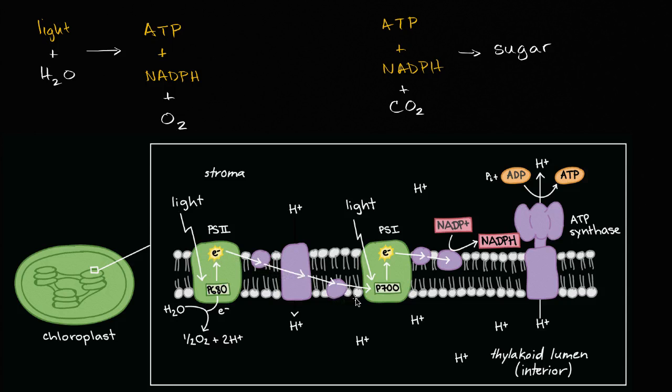They're going from a higher energy state to a lower energy state. The electrons are getting more and more comfortable, and some of that energy that's released as the electron goes from a high energy state to a lower energy state is used to pump hydrogen ions across the membrane, from the outside of the membrane in the stroma to the inside of the membrane, to within the thylakoid lumen.